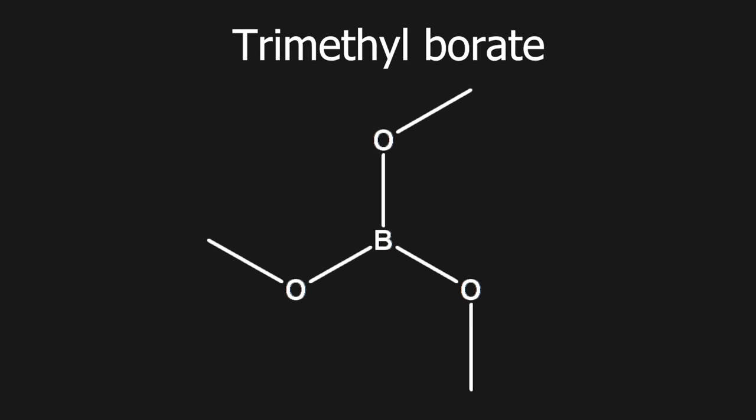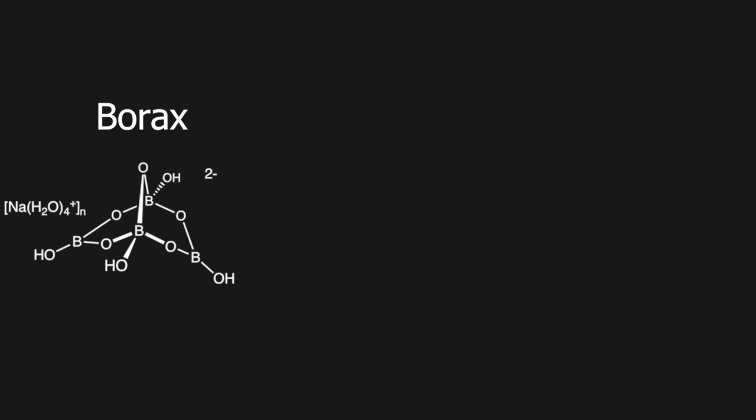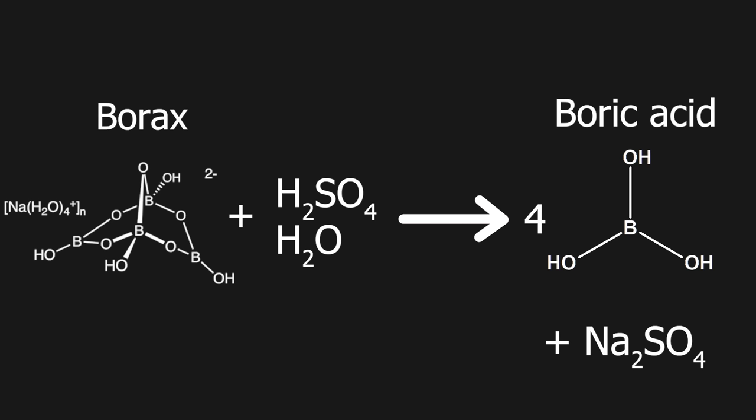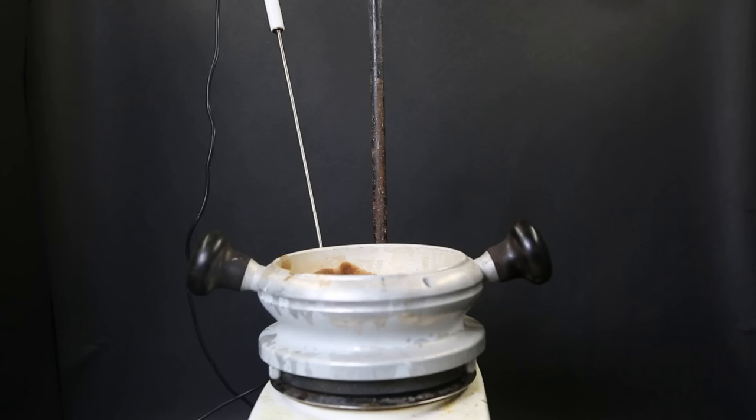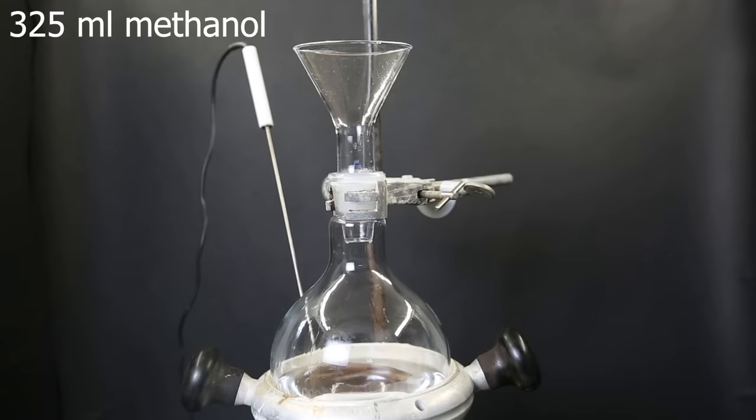Now that that is done, I can start preparing another reagent that I will need later, which is trimethylborate. Trimethylborate can be made by reacting methanol with boric acid. But since I don't have any boric acid on hand, I will use a different method. In this case, I will add borax and sulfuric acid, which will react to form boric acid in situ, which can then continue to react with the methanol. So I set up a heating mantle and a large flask with a funnel and stir bar. I then add in 325 ml of methanol. Then, while stirring, I add in 100 grams of borax.